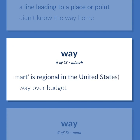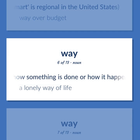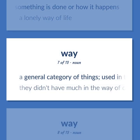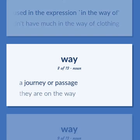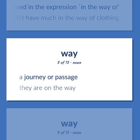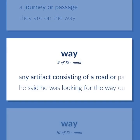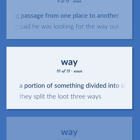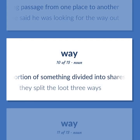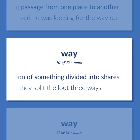Way over budget. How something is done or how it happens. A lonely way of life. A general category of things, used in the expression in the way of. They didn't have much in the way of clothing. A journey or passage. They are on the way. Any artifact consisting of a road or path affording passage from one place to another. He said he was looking for the way out. A portion of something divided into shares. They split the loot three ways.